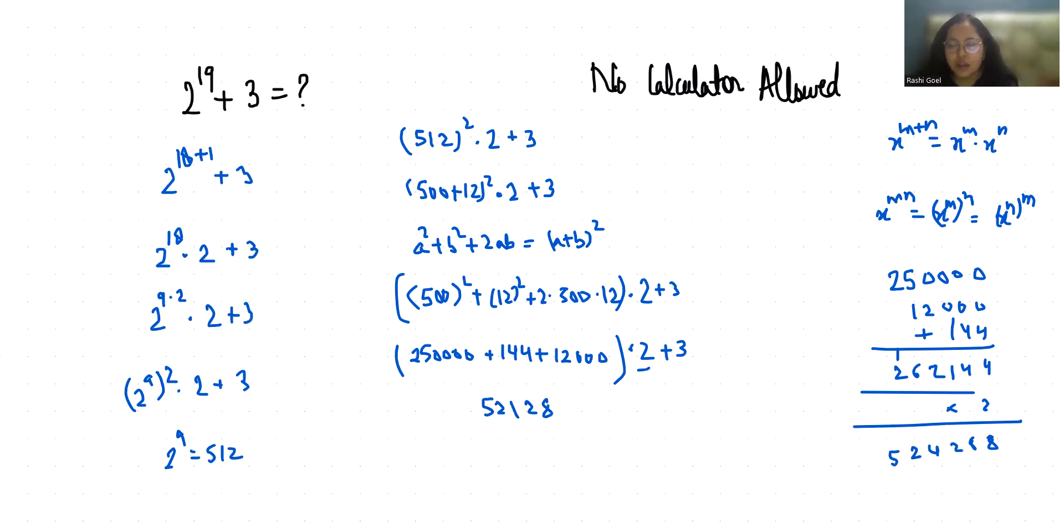Plus 3. So 8 plus 3 is 11, carry 1. 8 plus 1 is 9. So 524,291.